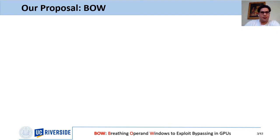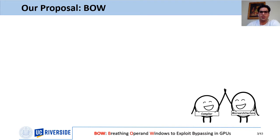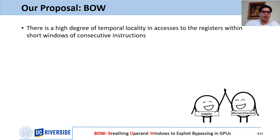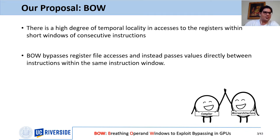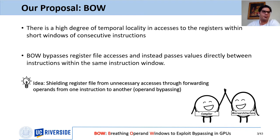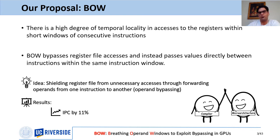To improve power and performance of GPUs, we proposed BO, which is a synergistic compiler and micro-architecture technique. We observed a high degree of temporal locality in accesses to registers within a short window of instructions, meaning there are substantial unnecessary accesses to the huge register file. BO bypasses register file accesses and instead passes values directly between instructions within the same instruction window — called operand bypassing. By eliminating a substantial amount of accesses to the register file, our technique improves IPC by 11% and reduces register file dynamic energy by 55%.